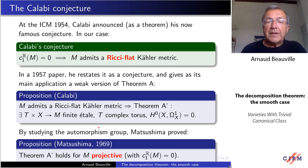In fact, for projective manifold, the result was proved unconditionally by Matsushima in 1969. Quite some time after. The theorem A prime holds for projective manifold with trivial first Chern class. This rests on a study of the automorphism group of M.